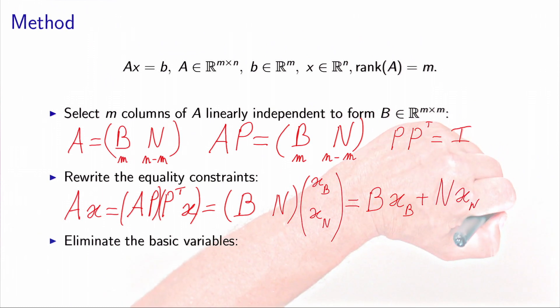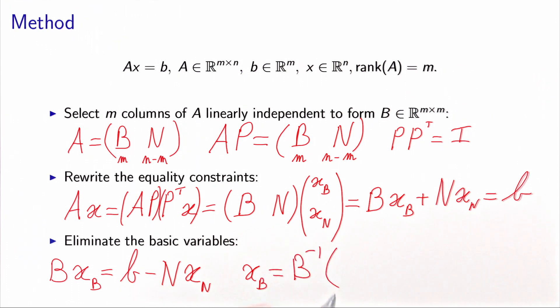And now we are in a position that we can eliminate the variables xB using the equation that we have just written. We have that BxB equals b minus NxN. And now we can multiply by the inverse of B, and this exists because the capital B is square, and because the columns are linearly independent, it's an invertible matrix. So we can write xB as B^{-1} times (b minus NxN).